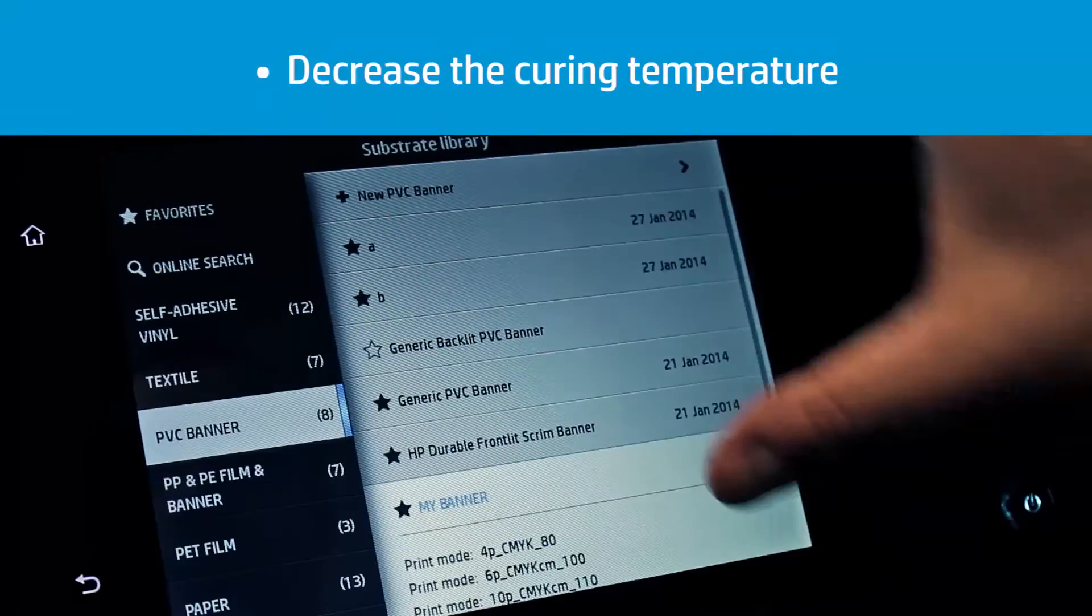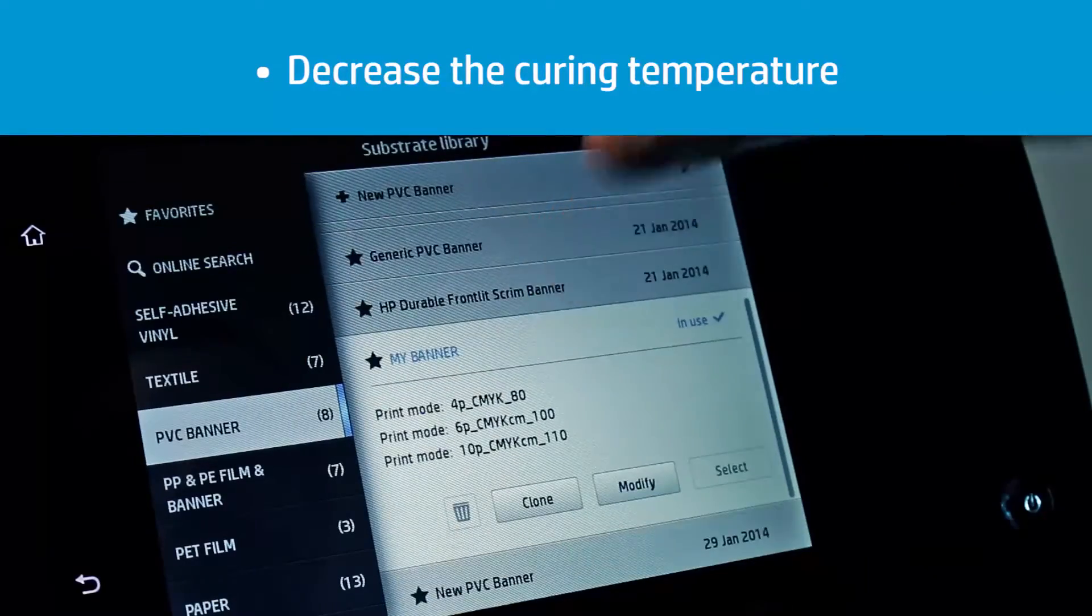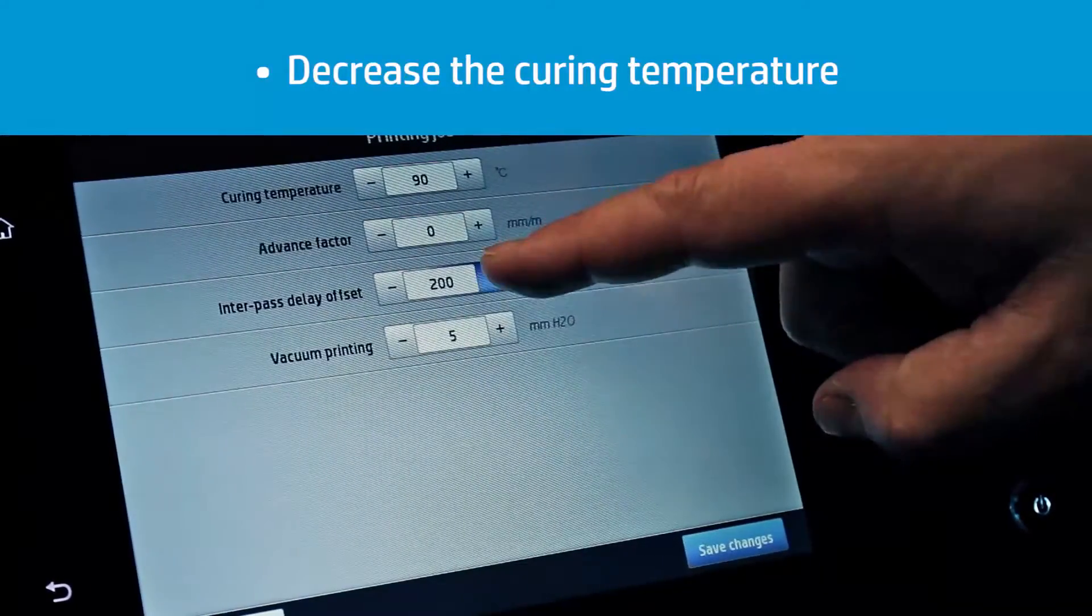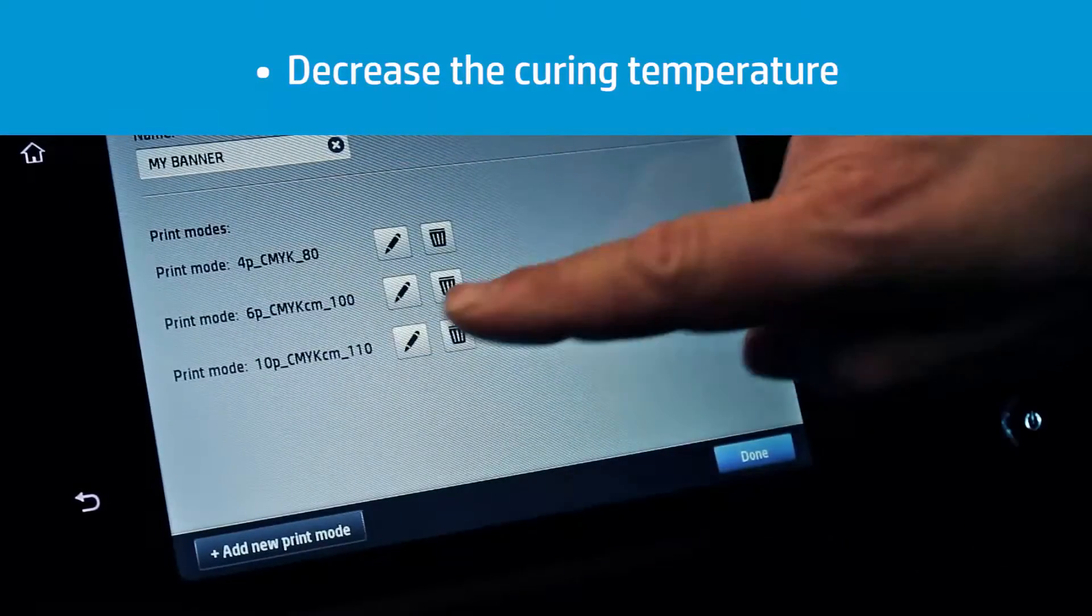The first option is to print more slowly and keep the plot under the curing module for a longer time. The print speed can be reduced by increasing the inter-swath delay value or by increasing the number of passes.